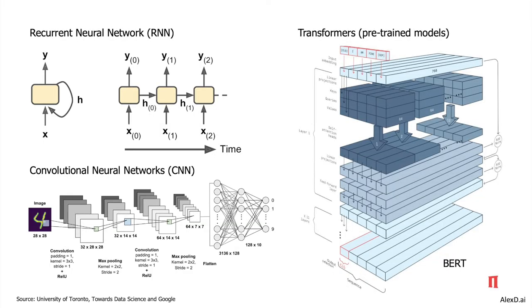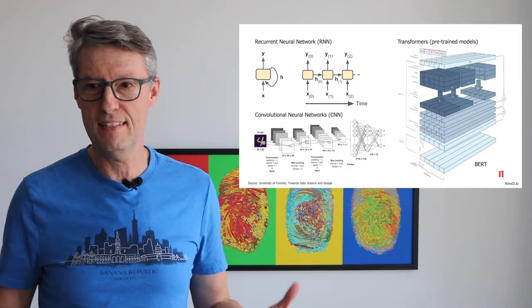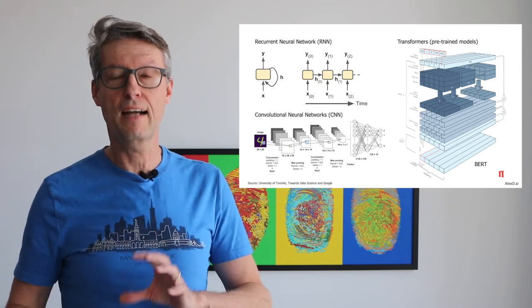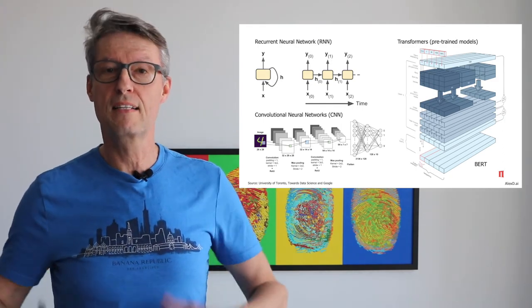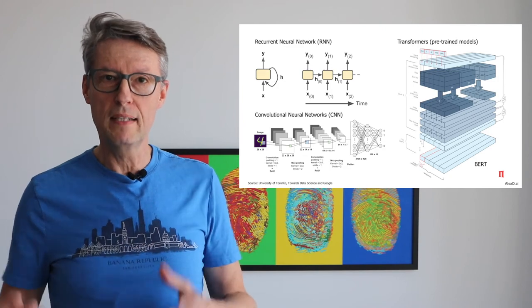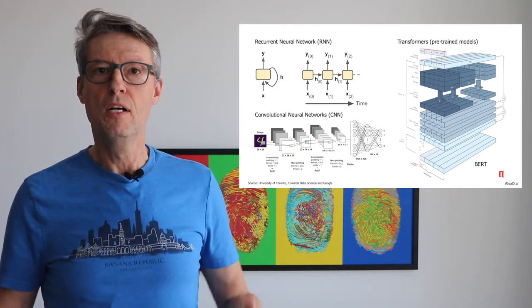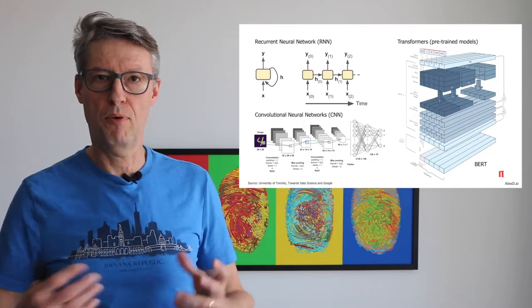And here is a very, very large neural network — it's a transformer, it's BERT from Google — with lots of different layers. You can see that this is not easy; it's an architecture that takes lots of people and a lot of time to build, but at the end it is very, very powerful to help in natural language processing.